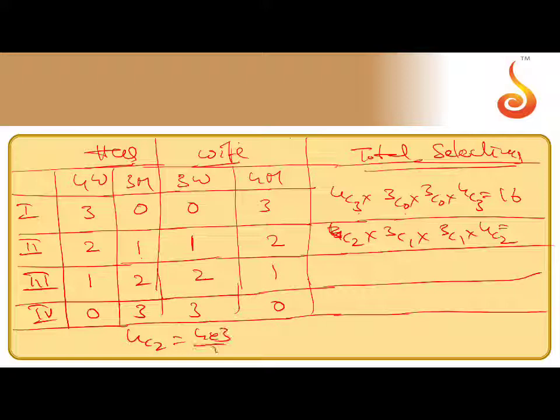4C2 is nothing but 6. 4C2 value 4 into 3 by 2, so that gives 6, 6 into 6, 36 into 9, 36 into 9 comes here.